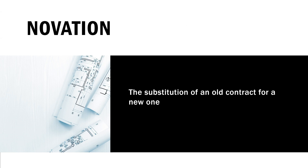N is for novation. In novation, we are substituting an old contract for a new one. For example, a buyer is trying to buy a new construction property from a developer. A couple weeks before closing, a hurricane destroys the property the buyer was going to purchase. The developer offers another home — better lot, better views — at the same price. If the buyer agrees, they both enter into a new agreement to purchase that different property. That's an example of novation.